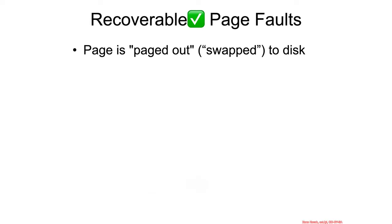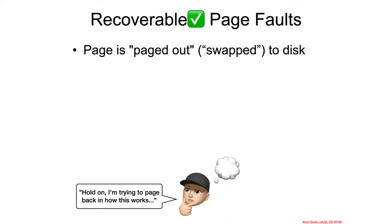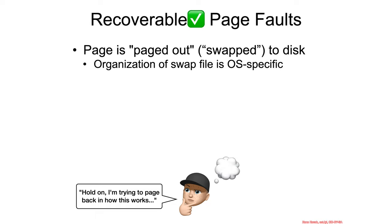Let's talk about some of the cases of recoverable page faults. The first is that if a page is swapped out — as in the operating system has decided to remove some memory from RAM and stick it onto the hard drive for use later on if that process tries to access it — swapping it out to disk would be one reason. You should be aware that every operating system has some different format, and some of them reuse the unused and ignored bits in the page table entry to try to help it look up where this information is.